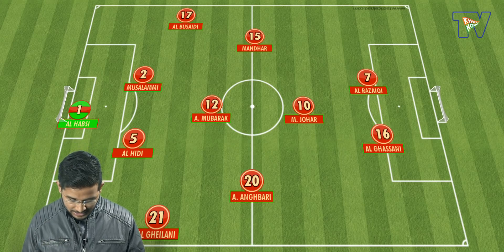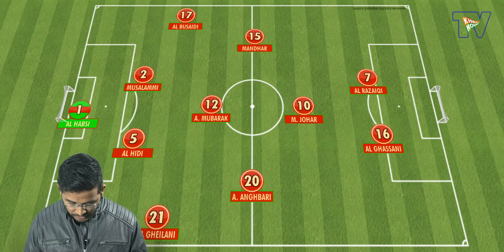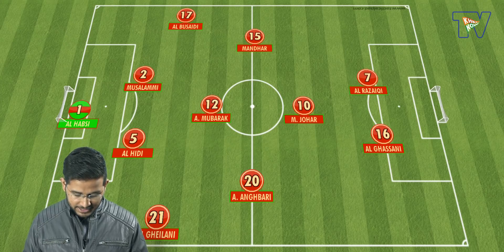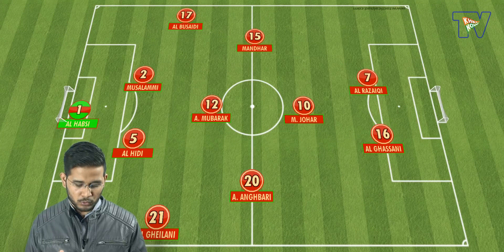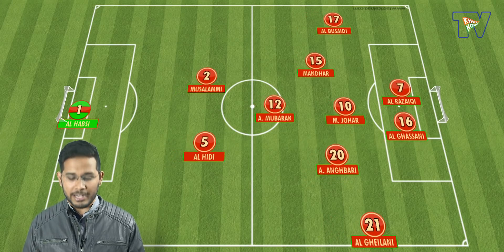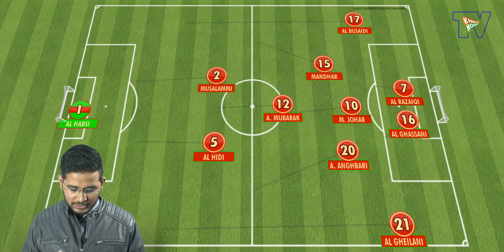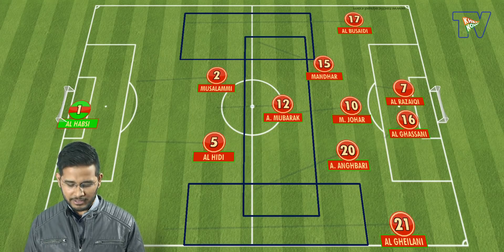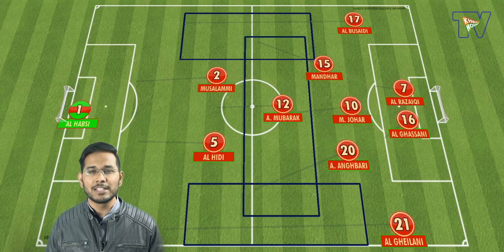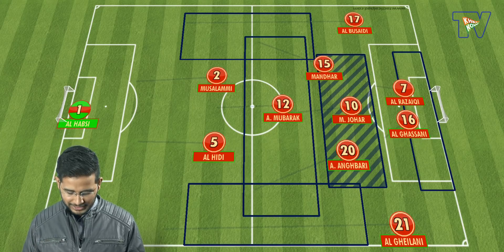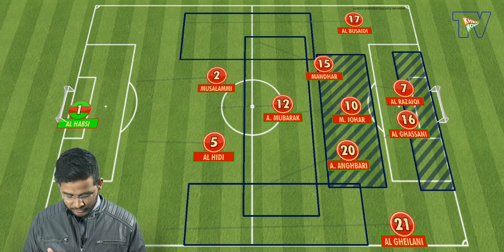Oman has changed their style. India needs to be aware that Oman's fullbacks — both left and right — provide a lot of width and overlapping runs. They go forward, get into the box, push the number 10, and combine with the right and left backs. You can see the formation on screen: 3 back, 3 midfield, 2 wide, and 2 up front.